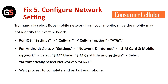Fix 5: Configure the network settings. Try manually selecting the host mobile network from your device, since the device may not identify the exact network automatically. For iOS, go to Settings, then Cellular, then Cellular Options, and select AT&T. For Android, go to Settings, then Network and Internet, select your SIM card mobile network and enter the SIM card settings. Select automatic network selection and choose the AT&T network. Wait for the process to complete and restart your phone.